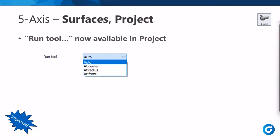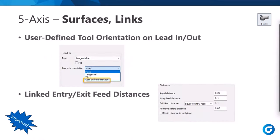In the normal five-axis surface pass, the Run Tool option — available in other strategies — was not available for the Project strategy. Now it is, giving more flexibility. Also in surface passes, there is a user-defined tool orientation on the lead-in and lead-out. You can define a vector for the tool orientation during those moves. There's also a simple change to link entry-exit feed distances — a setting to make exit equal to entry so you're only changing one value.